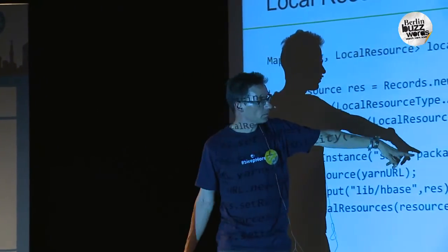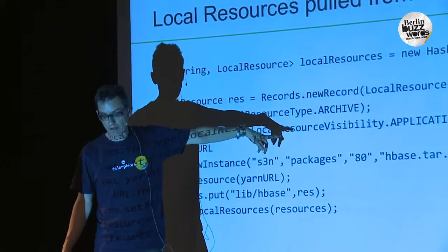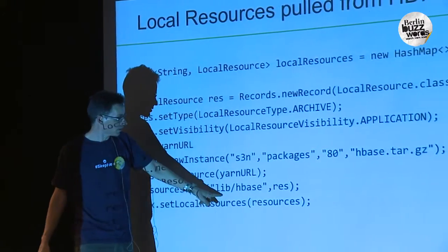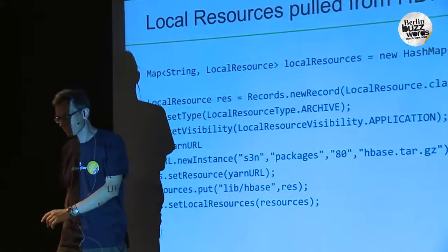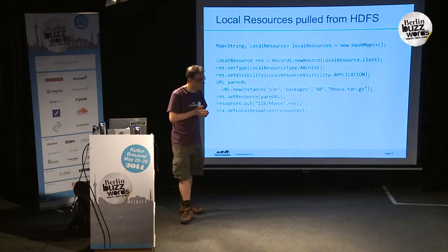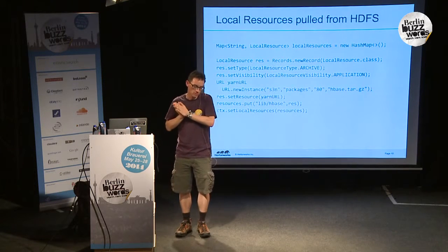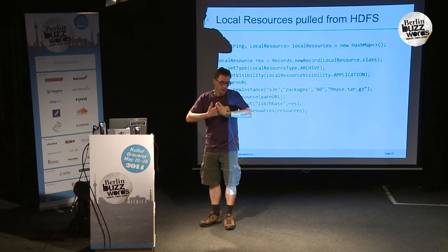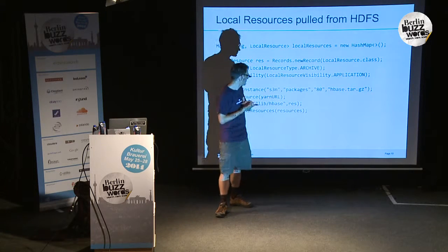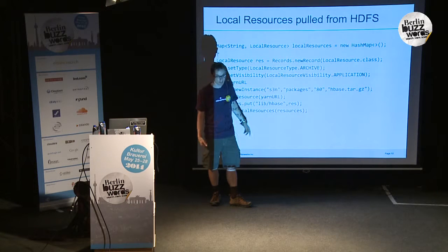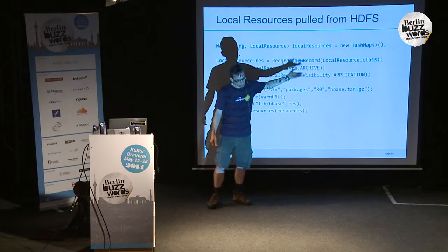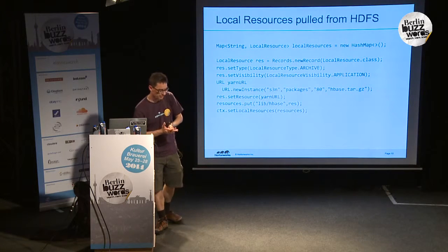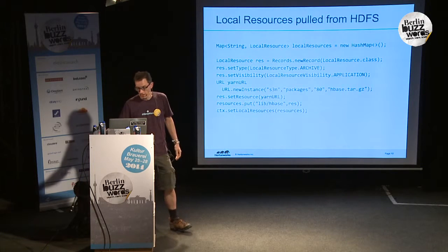I say, here's a tarball, it's an archive — which tells the node manager to untar or unzip it when installed — and it gives the relative path, like installing into lib/hbase. When the container comes up, it gets untarred into a relative path in the local file system. The node manager, when told to launch a container, pulls all those resources down, expands them, copies them, and execs your bash command line at the base of that path. So if I install HBase into lib/hbase and set my bash command to lib/hbase/hbase-0.98/hbase, it actually execs HBase. That's the secret: download your binaries, set the environment variable, and run your code.